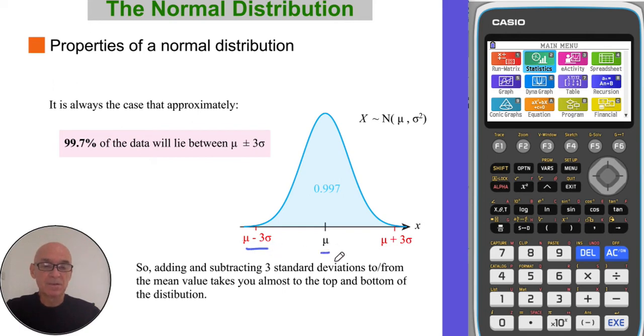What that means is if we add or subtract three standard deviations from the mean value, it will take you virtually to the top of the curve and to the bottom of the curve. This is helpful when you have to put your scale on your diagram.